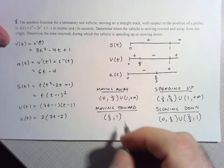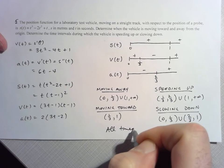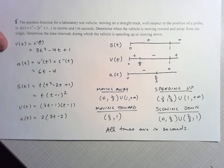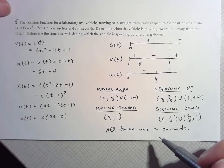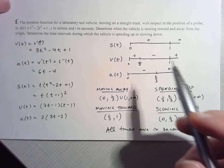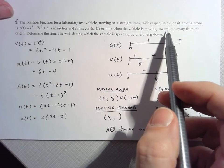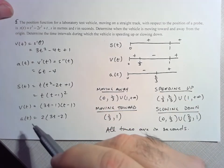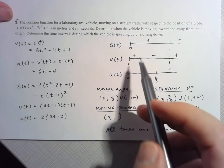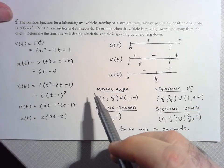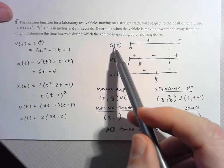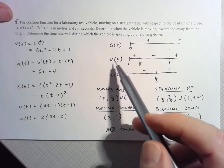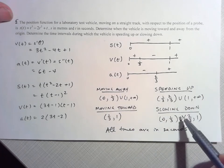We should specify that all times are in seconds, just to make sure we account for the context. To summarize: since we had to determine both moving away and toward, and speeding up and slowing down, that's why I needed to find all three functions. In all cases, I found their zeros to determine where they're positive and negative, then looked at the relationship between position and velocity for moving toward and away, and velocity and acceleration for speeding up and slowing down.